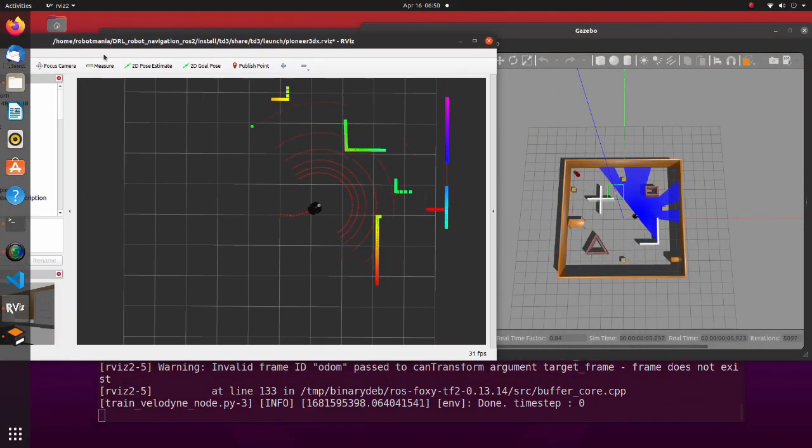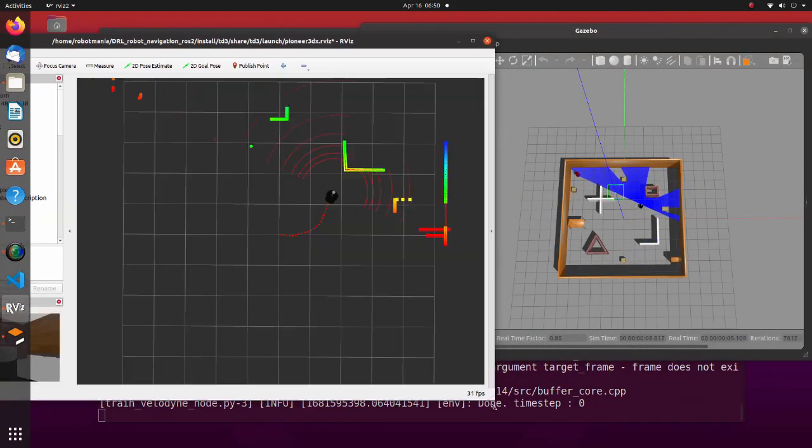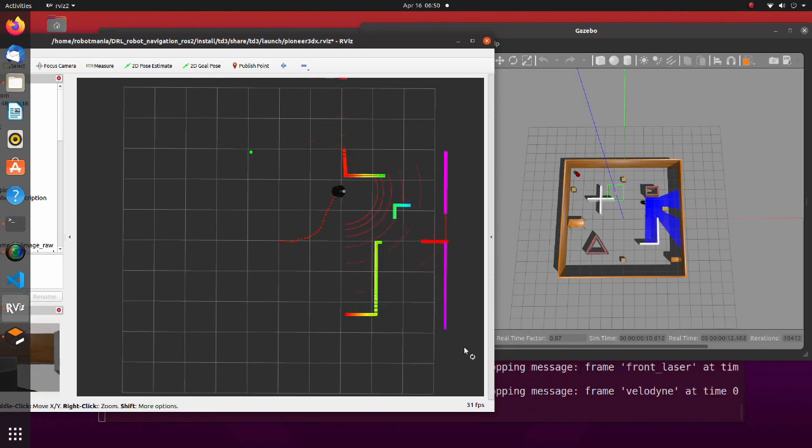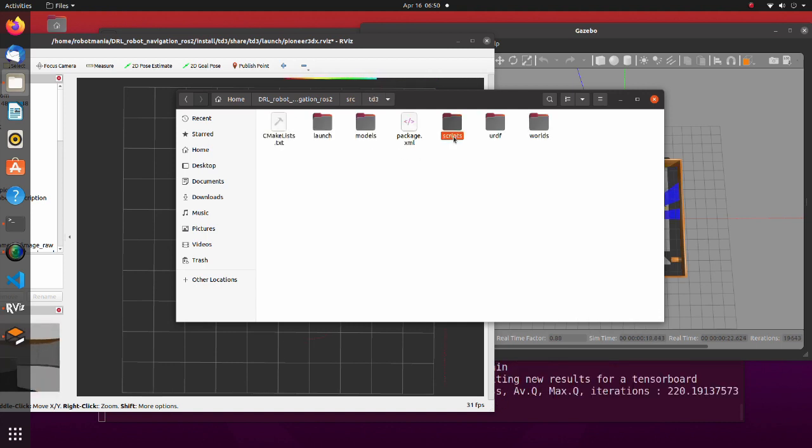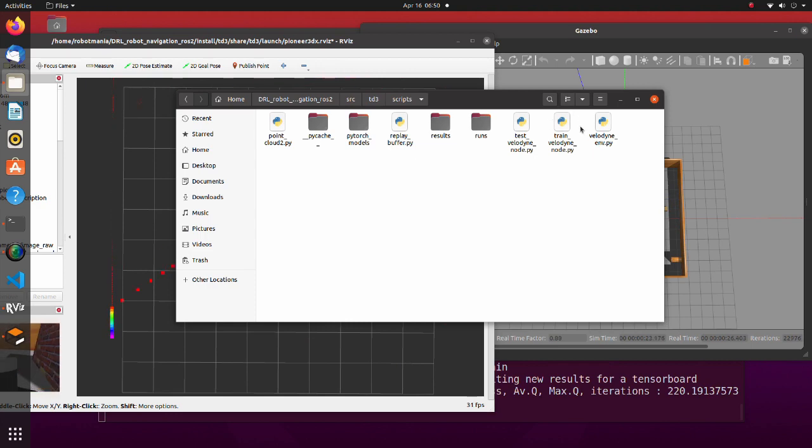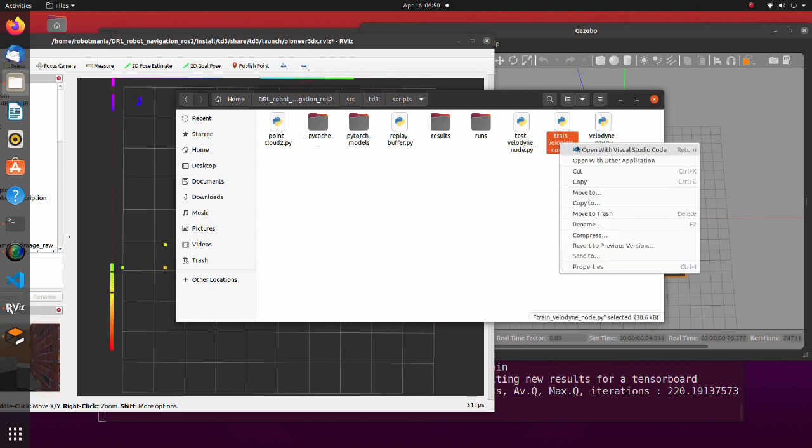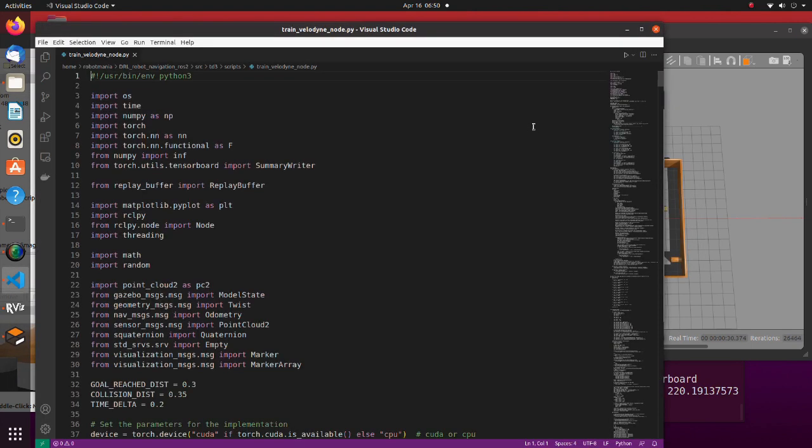To observe how training goes, tensor board is helpful. Open train Velodyne node pi script using visual studio code. Launch the tensor board by clicking on launch tensor board session. Select current directory.